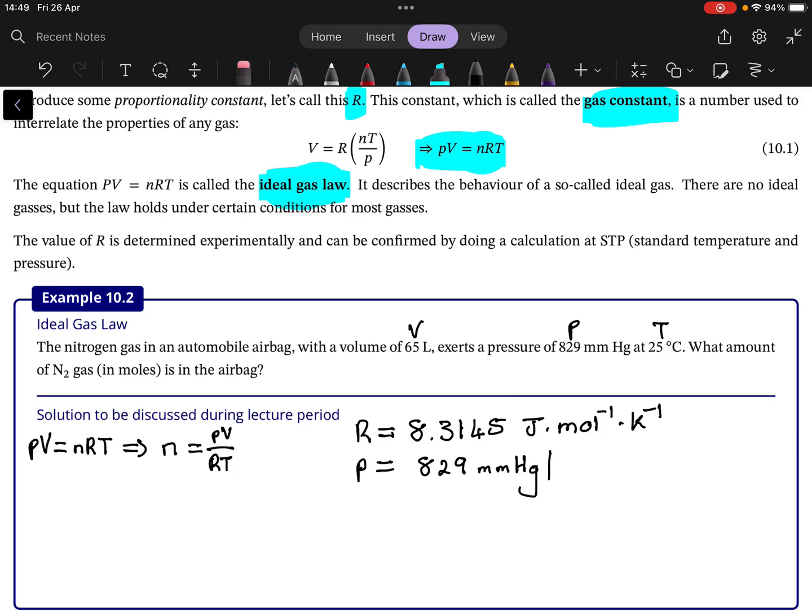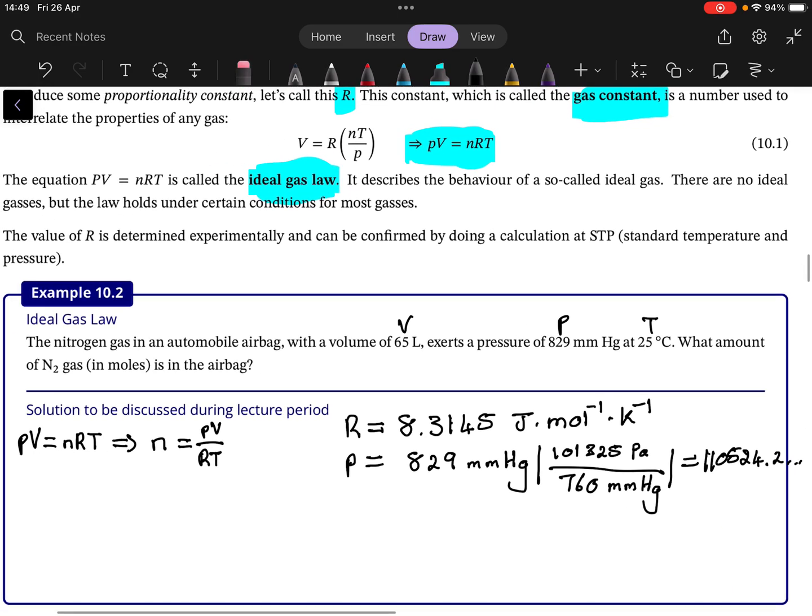And if you remember your conversion factors, you will see it's 101,325 pascal is in 760 millimeter mercury. And you should get a value here, 101,325 divided by 760, multiplied by 829. It's going to be 110,524.2 and some values pascal.